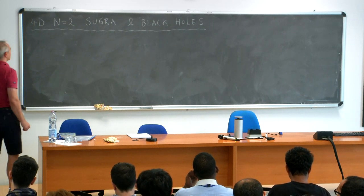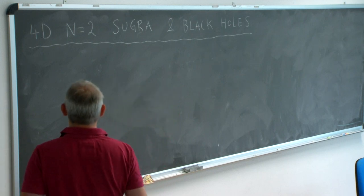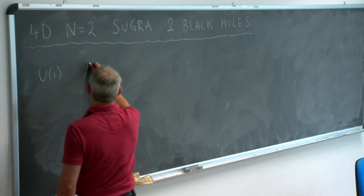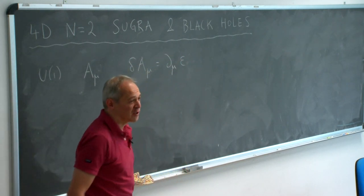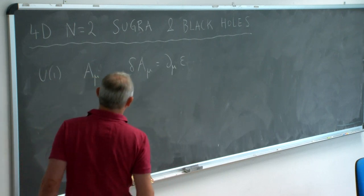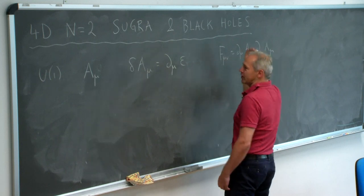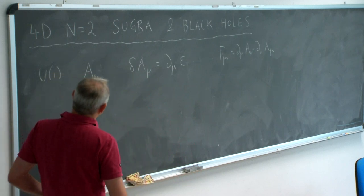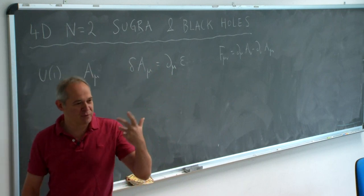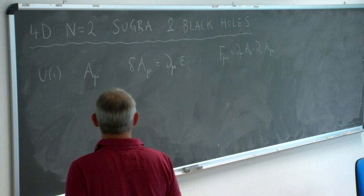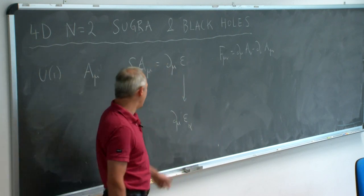Let's start with something really simple. Before going to N equals 2 supergravity, let's go to minimal supergravity and even forget about supersymmetry for the moment. Let's think about the gauge principle: the simplest setup is a gauge field with a gauge transformation involving a gauge function epsilon, which is a scalar function. We know how to make gauge invariant quantities by constructing field strengths, and the action is just F-mu squared.